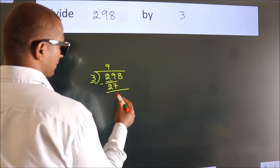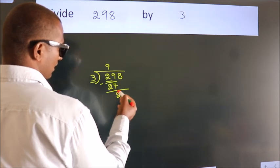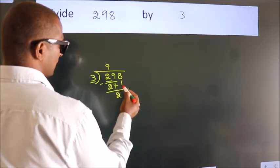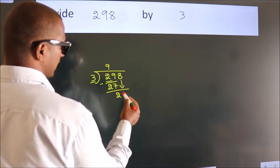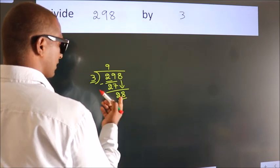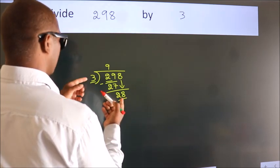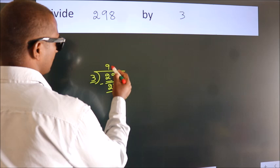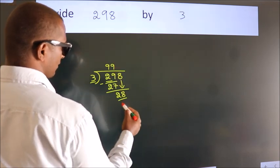Now we should subtract. We get 2. After this, bring down the next number, so 8 down. So, 28. A number close to 28 in the 3 table is 3 nines, 27.